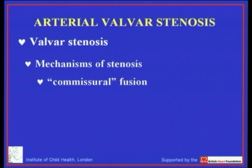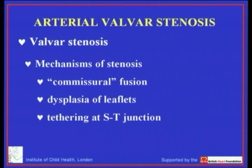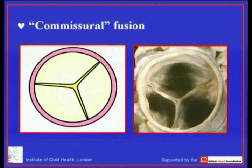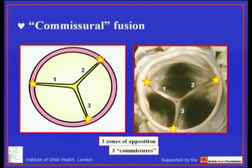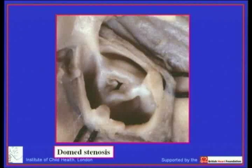One is so-called commissural fusion, another is overall dysplasia of the valvar leaflets, and the third — closely linked to commissural fusion — is tethering at the sinutubular junction. You can easily imagine that if we have three zones of apposition between the leaflets, and those leaflets fuse at the peripheral attachments called the commissures, the greater the degree of commissural fusion the more severe will be the valvar stenosis.